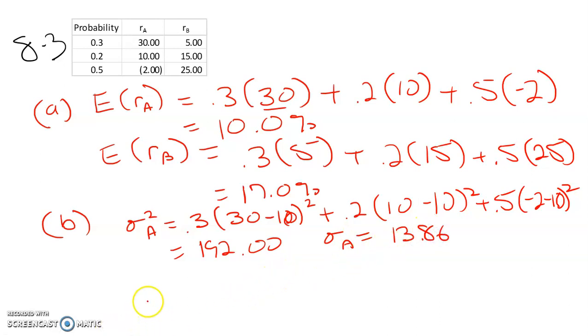So now do the variance for B. So 0.3 times 5 minus 17 squared plus 0.2 times 15 minus 17 squared,